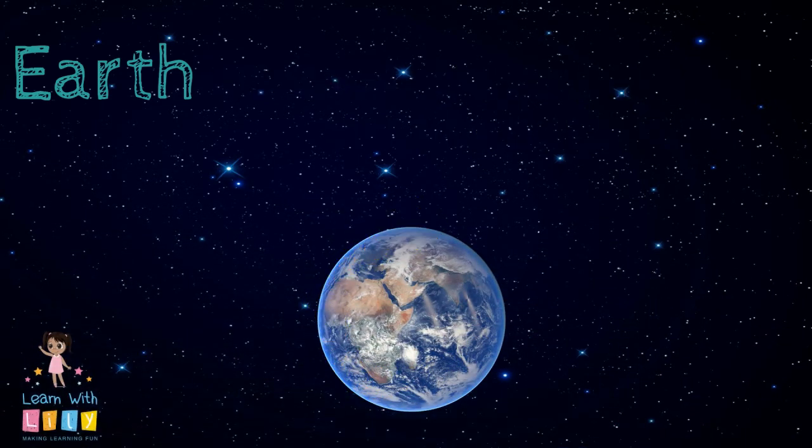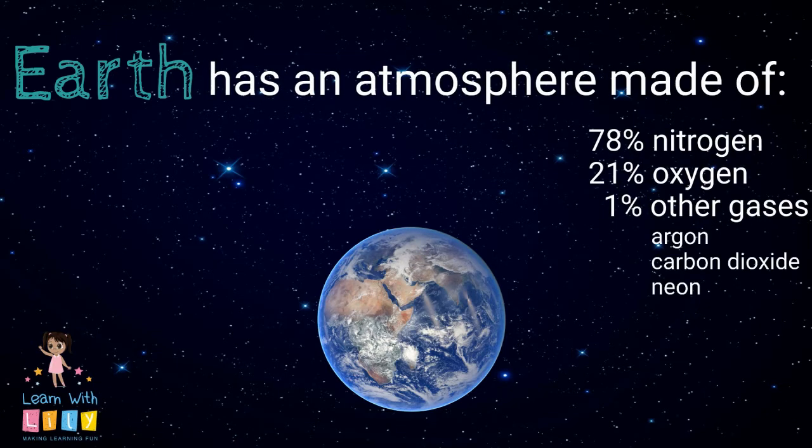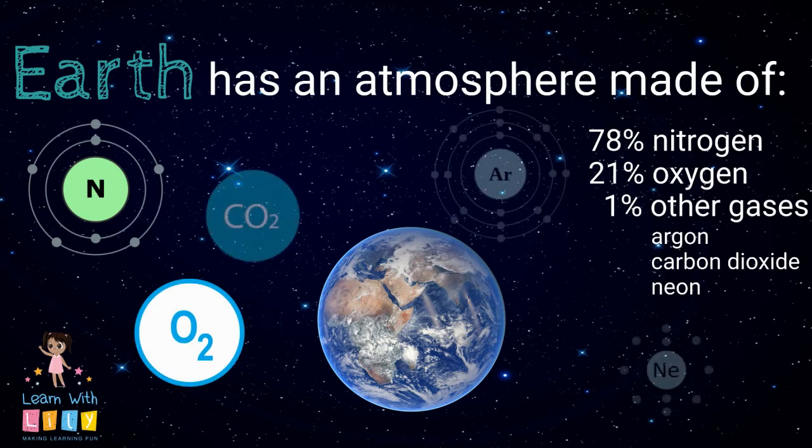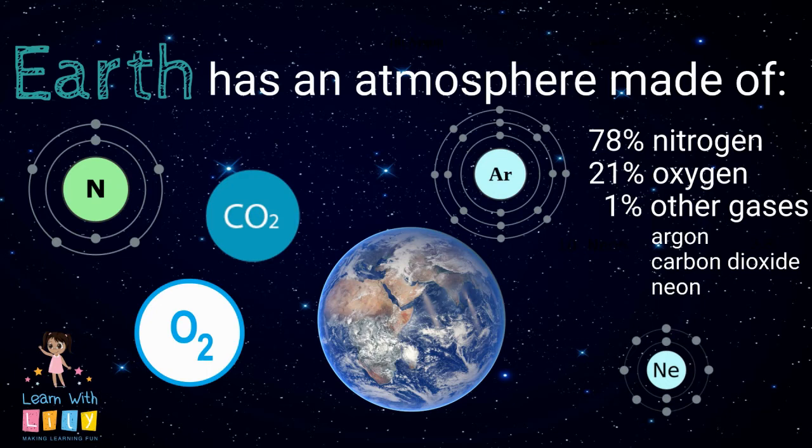What do we know about Earth's atmosphere? Well, it's made up of 78% nitrogen, 21% oxygen, and 1% other gases like carbon dioxide, argon, and neon. That's pretty cool.